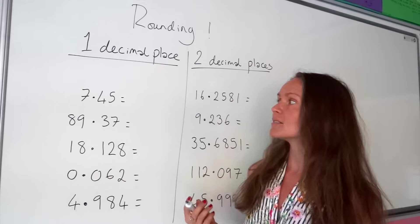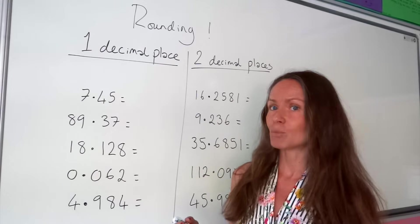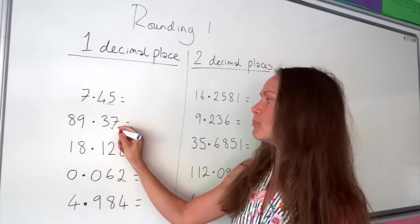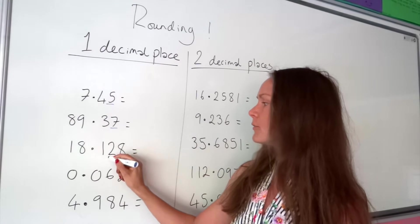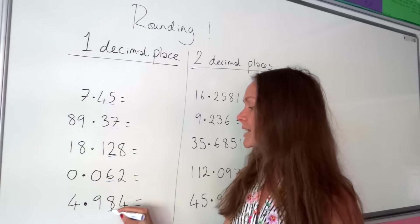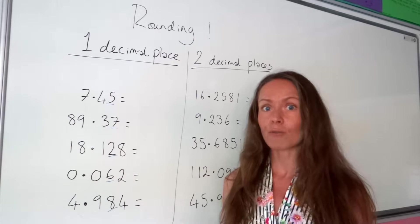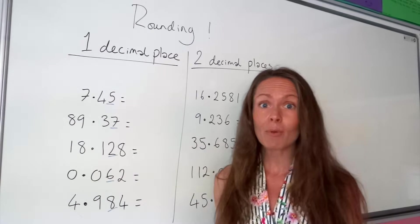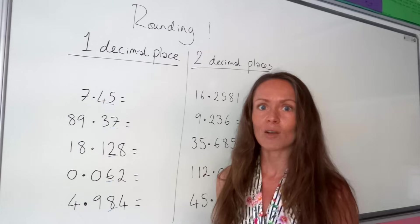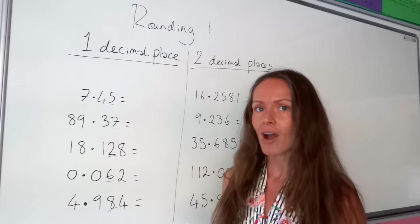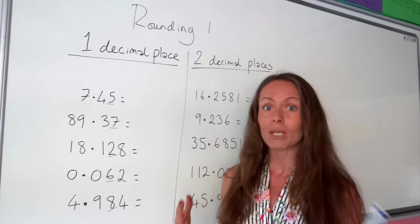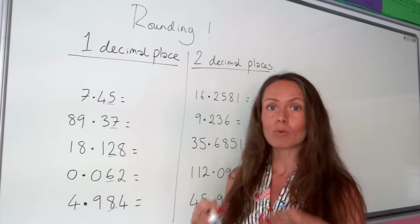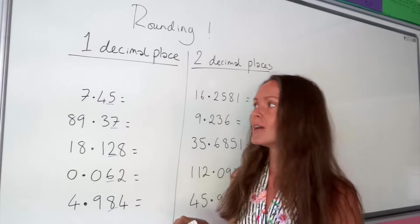When we're rounding to one decimal place, we have to check the second number after the decimal point to see if it rounds that first one up or not. Remember when we're rounding, we only round up if the number is five or bigger than five. And if it's smaller than five, then we don't round up.